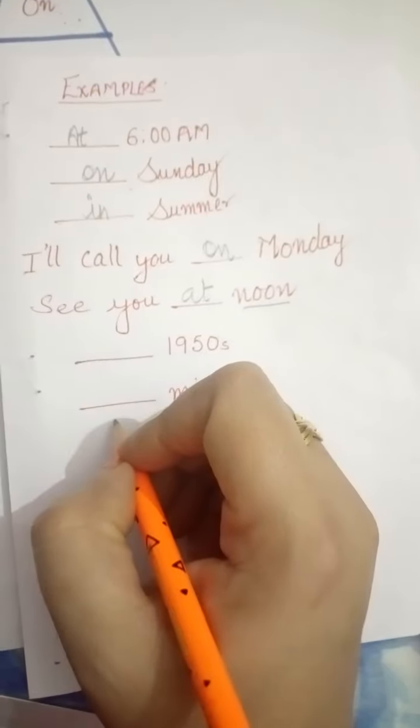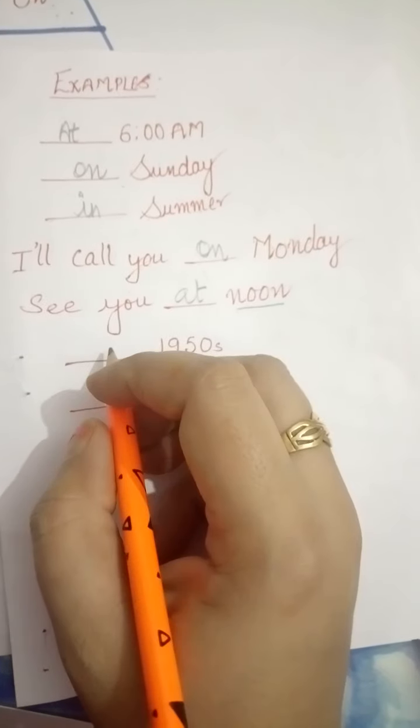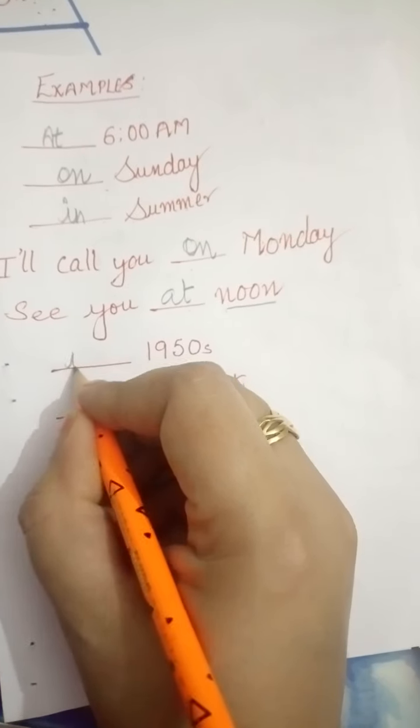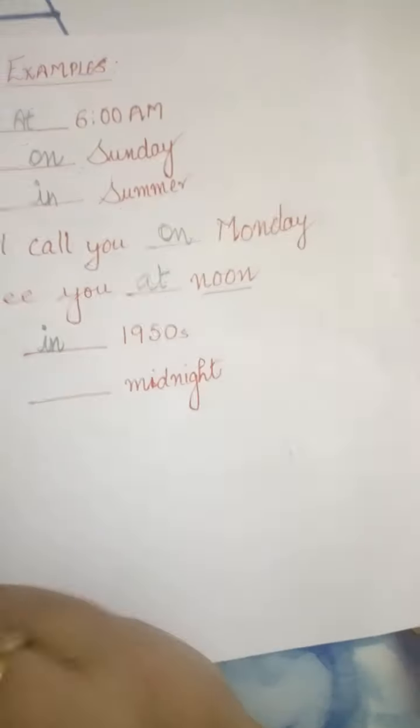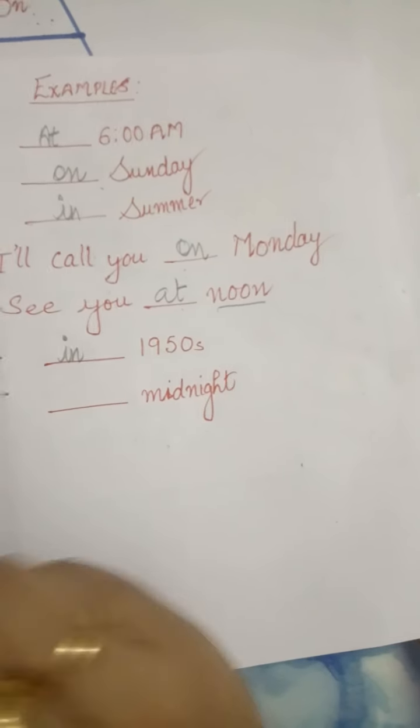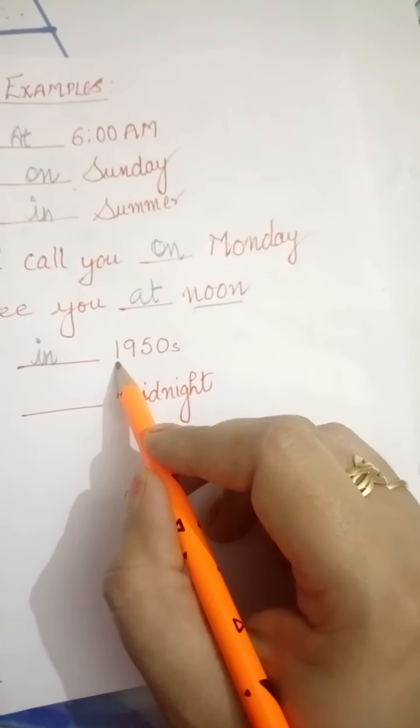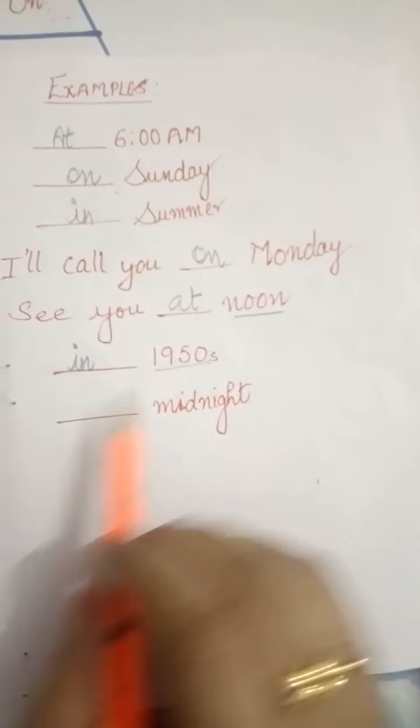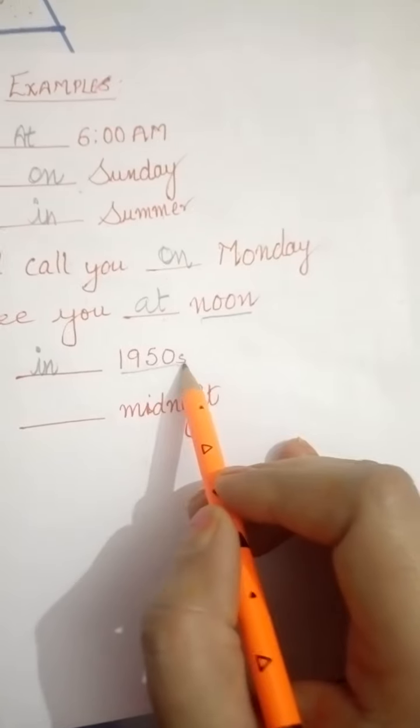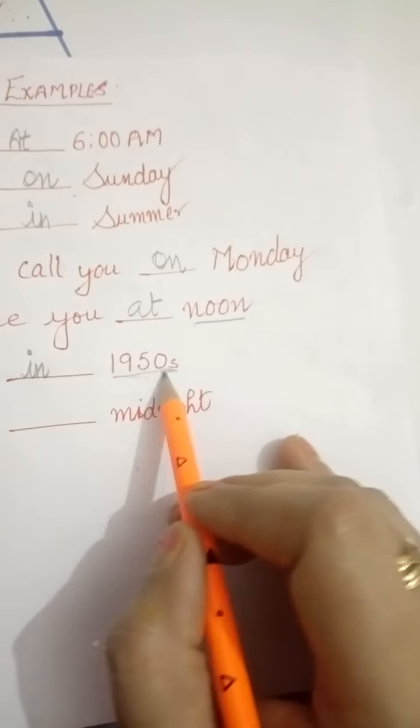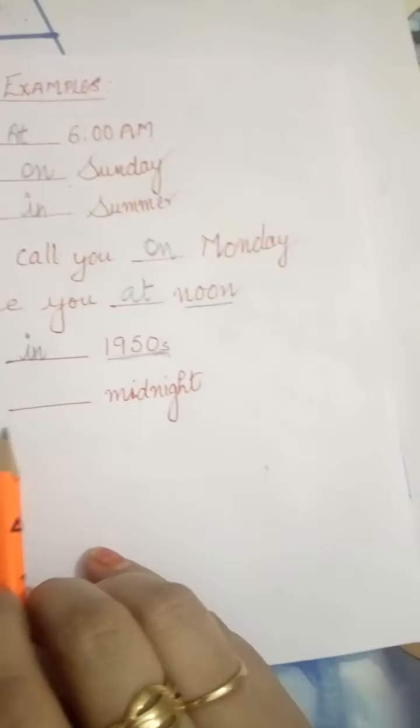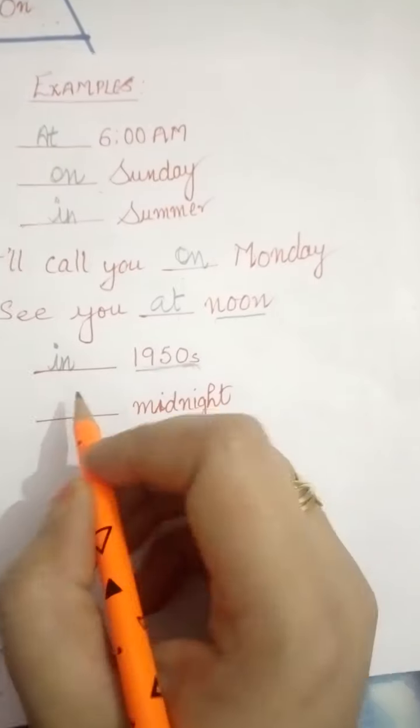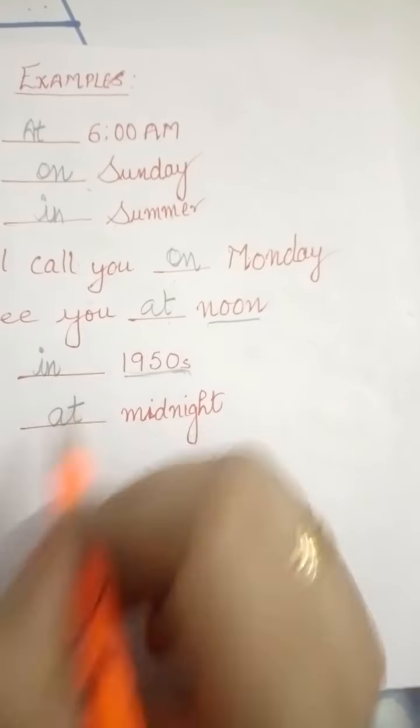Next one is dash 1950s. In 1950s. Because 1950s is a period of time, or we can say a long period of time or a certain year. Dash midnight. At midnight.